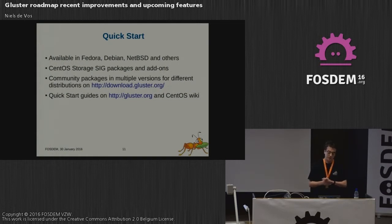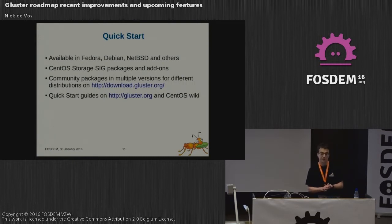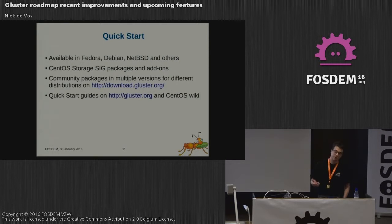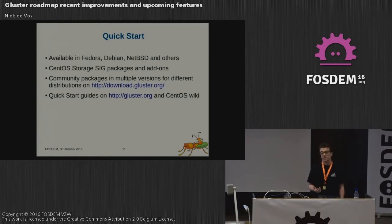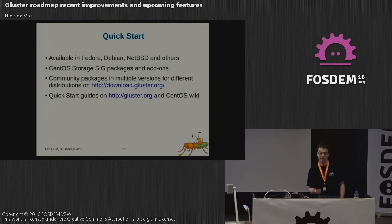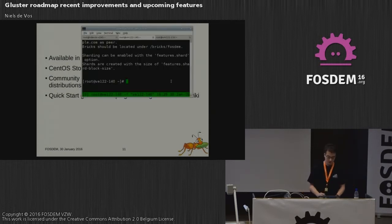We are also part of the Storage SIG, the special interest group from the CentOS project. We provide Gluster packages there, so anyone running CentOS can easily install Gluster. We also provide more versions, sometimes even different architectures, on download.gluster.org. So anyone who wants to use Gluster can go there. And we have several quick start guides depending on your operating system. I'll show you a little bit of how to use Gluster and how to install it.